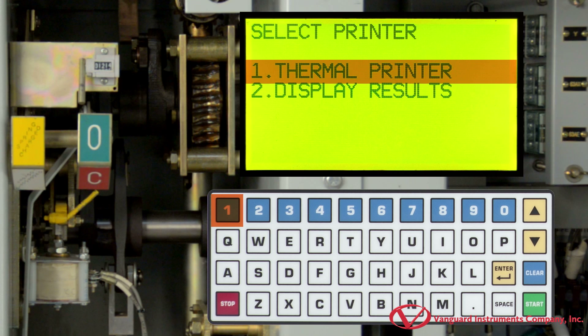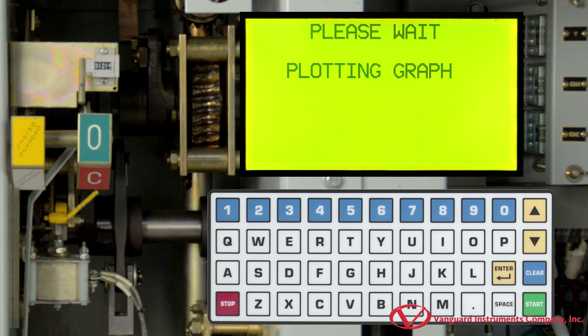Now, press the 1 key to select Thermal Printer. And now, the test results are going to be printed on the unit's thermal printer.